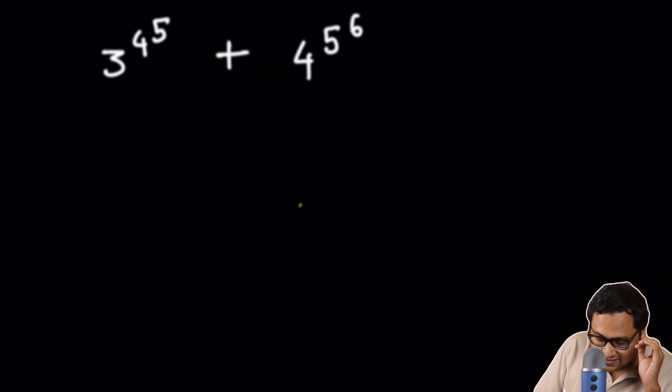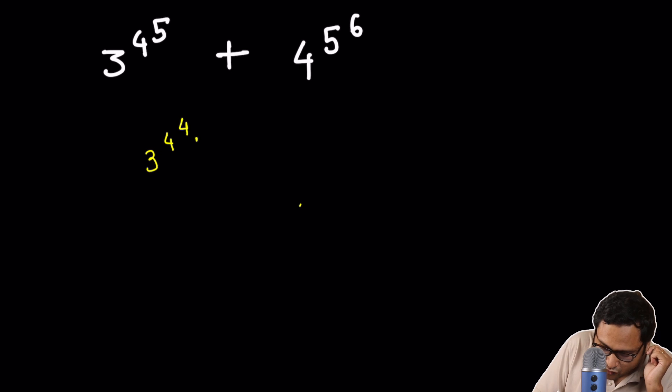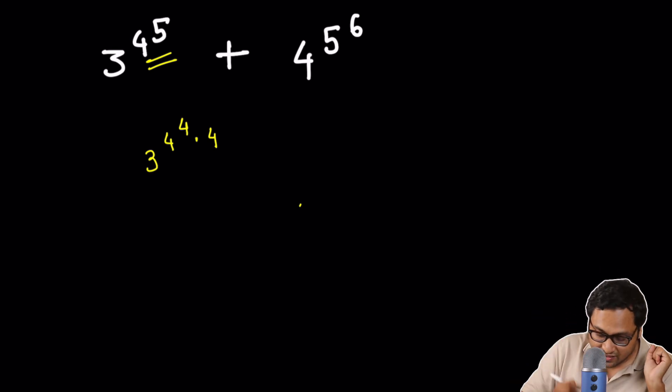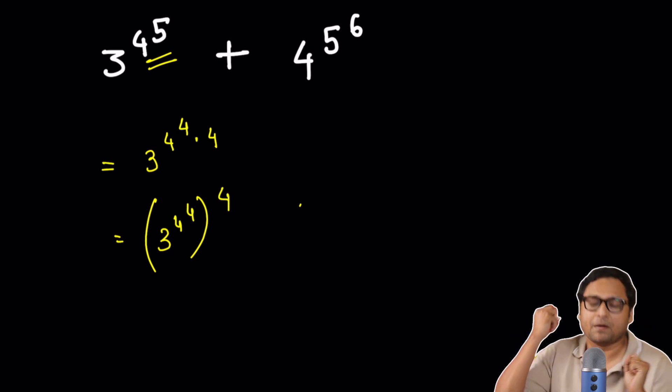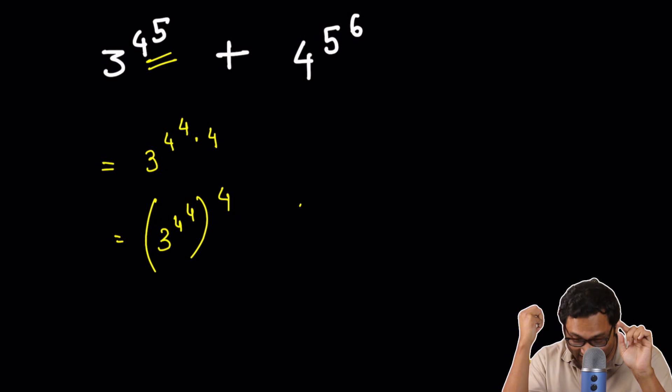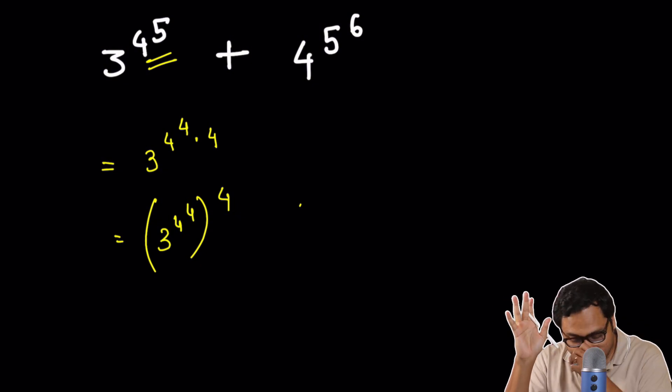So the first thing is, you notice that I can write this as 3 to the power 4 to the power 4 times 4 is 4 to the power 5 thing is 4 to the power 4 times 4, right? Which is 3 to the power 4 to the power 4 whole to the power 4. Oh, I have the a to the power 4 thing, right? So we're getting somewhere. Now let's look at the second piece of the puzzle.